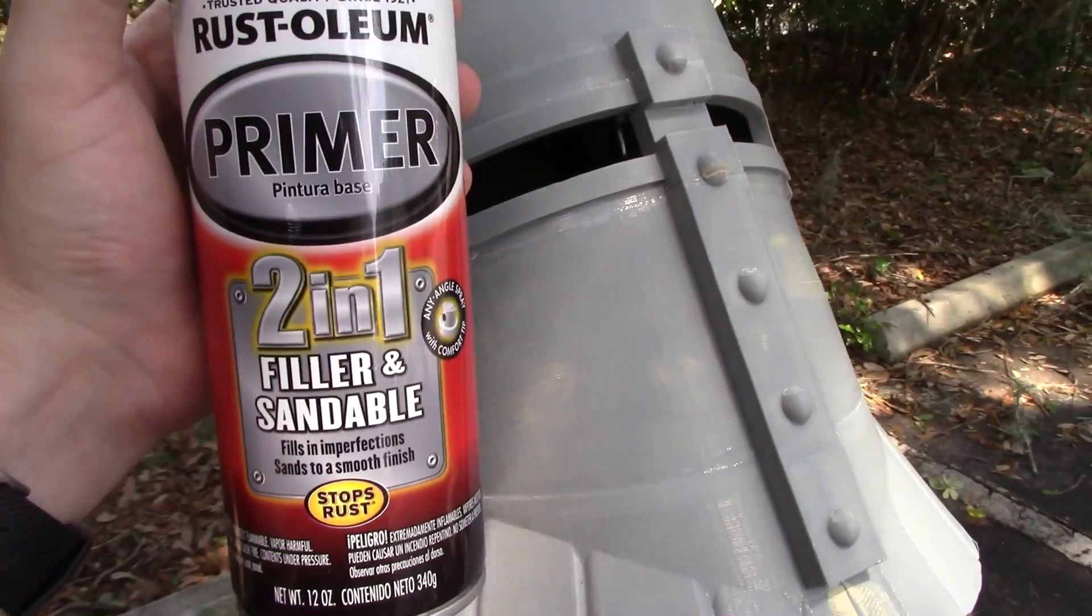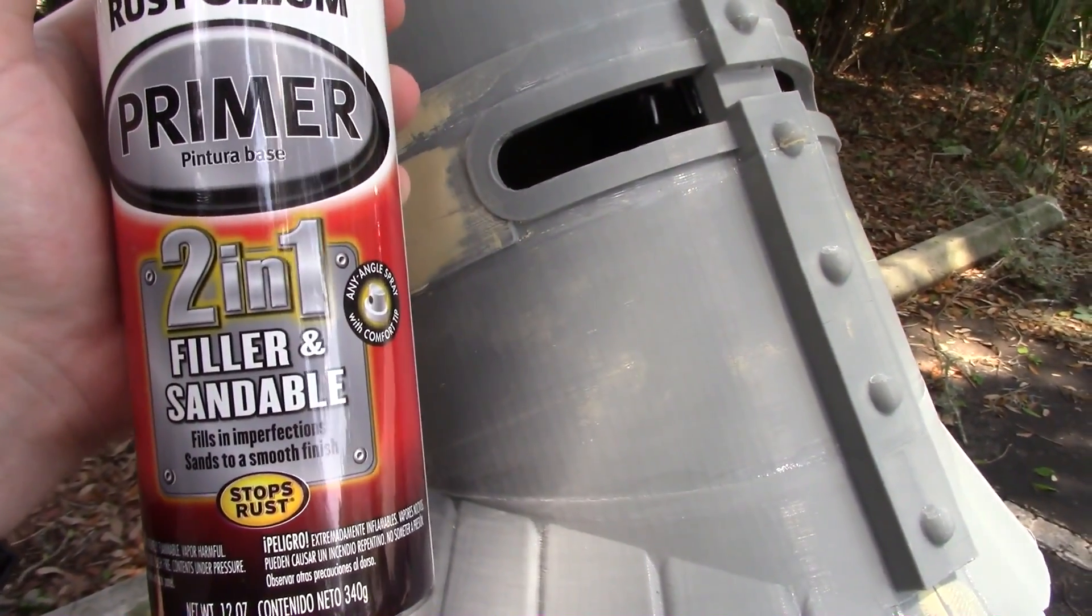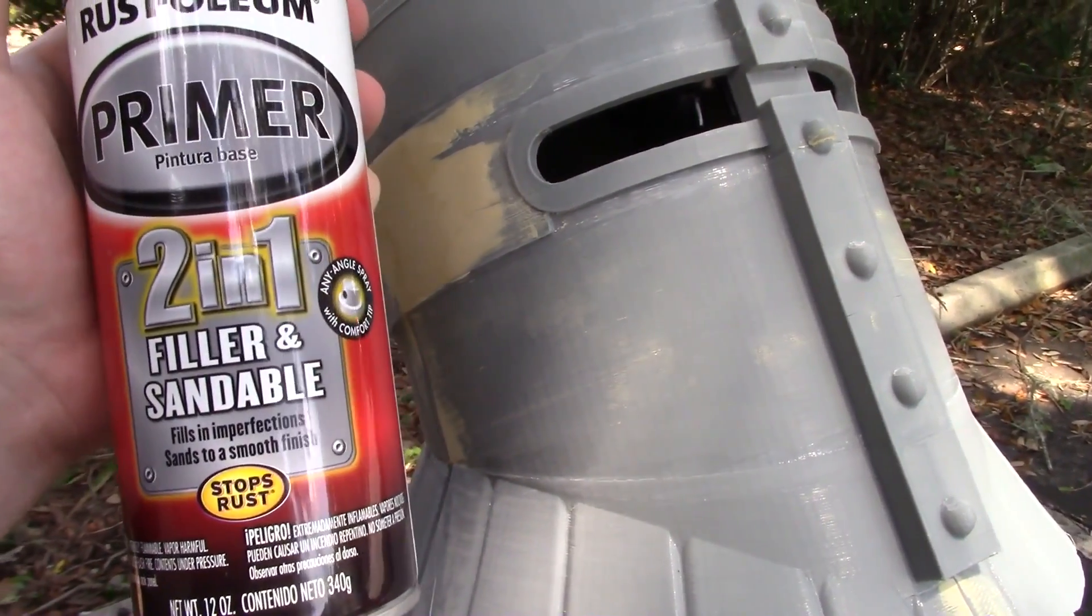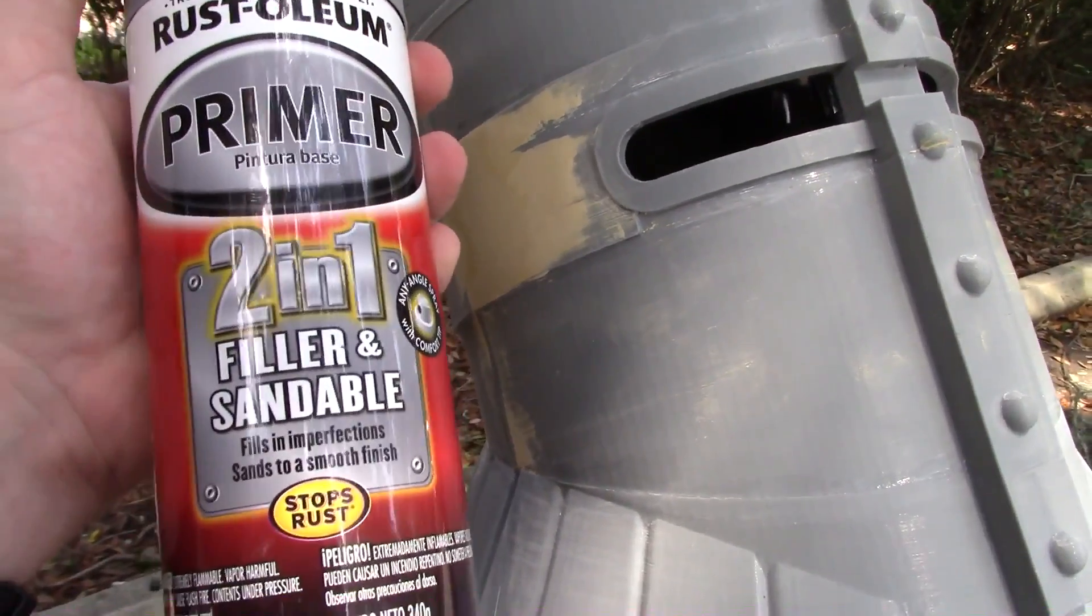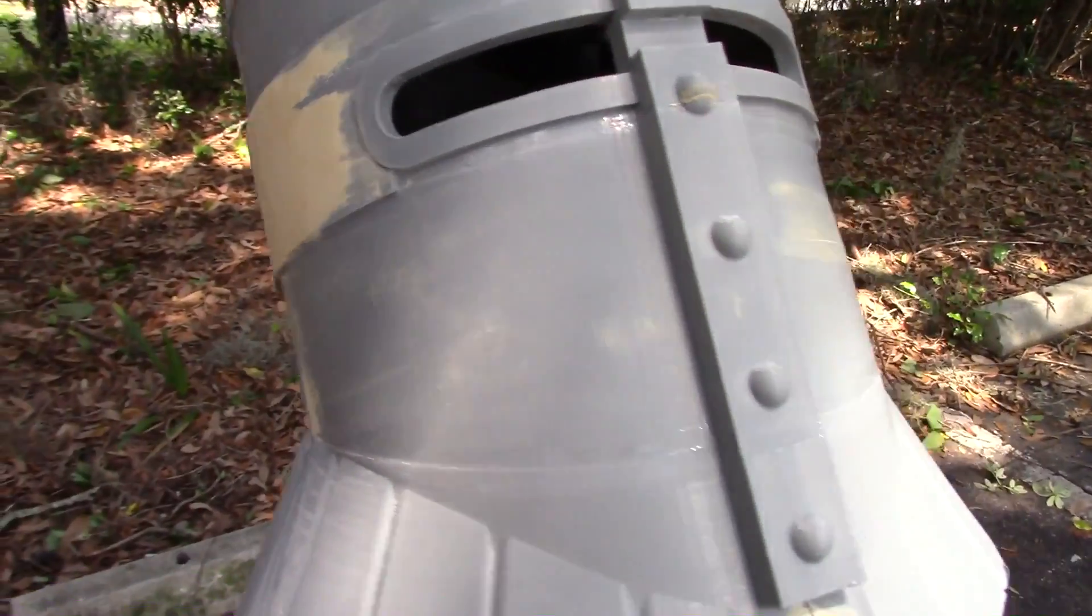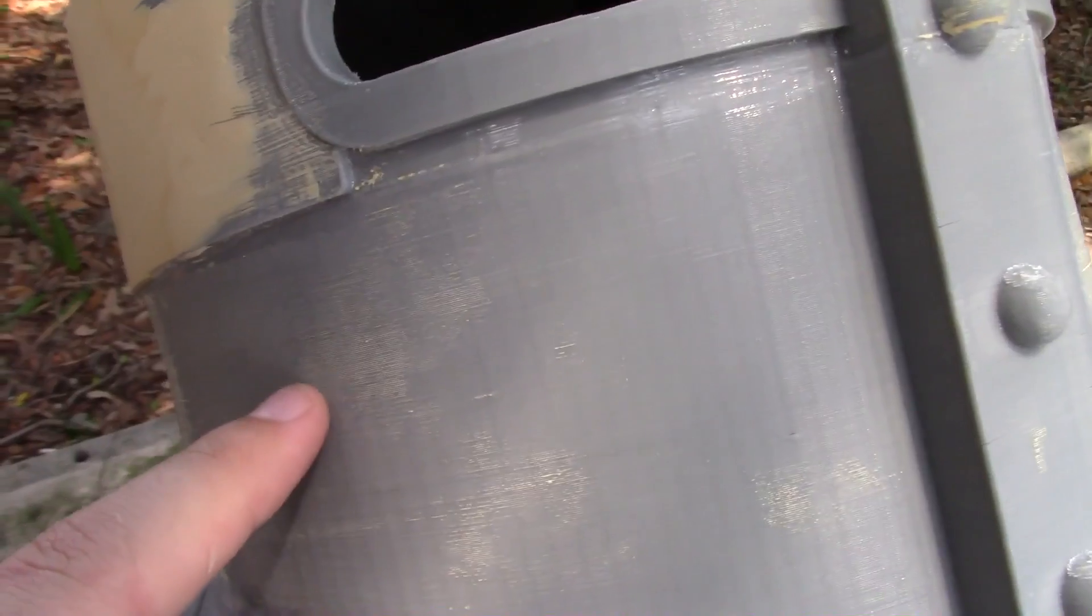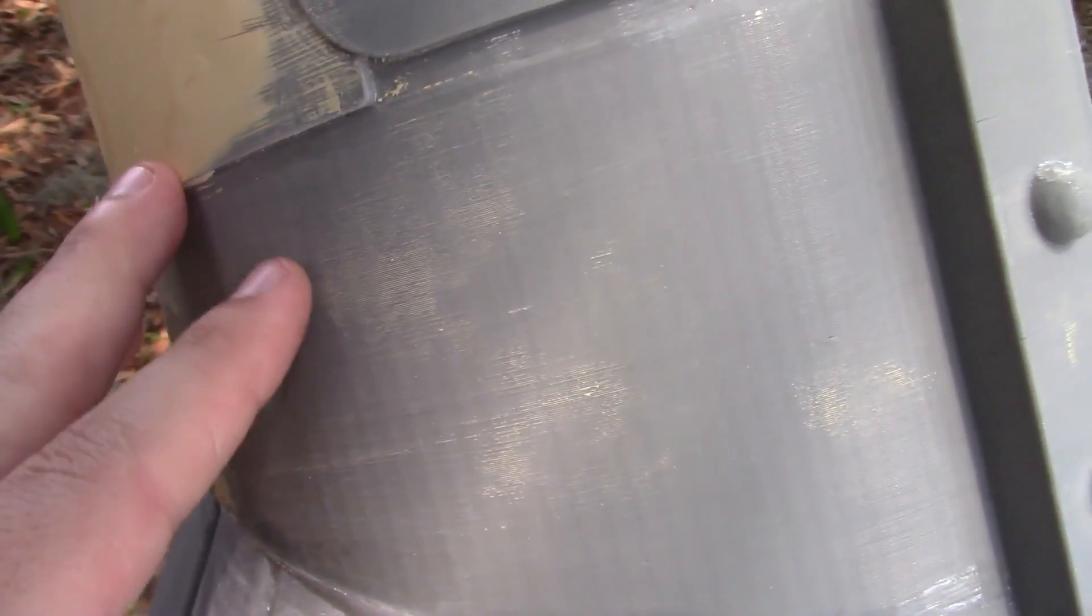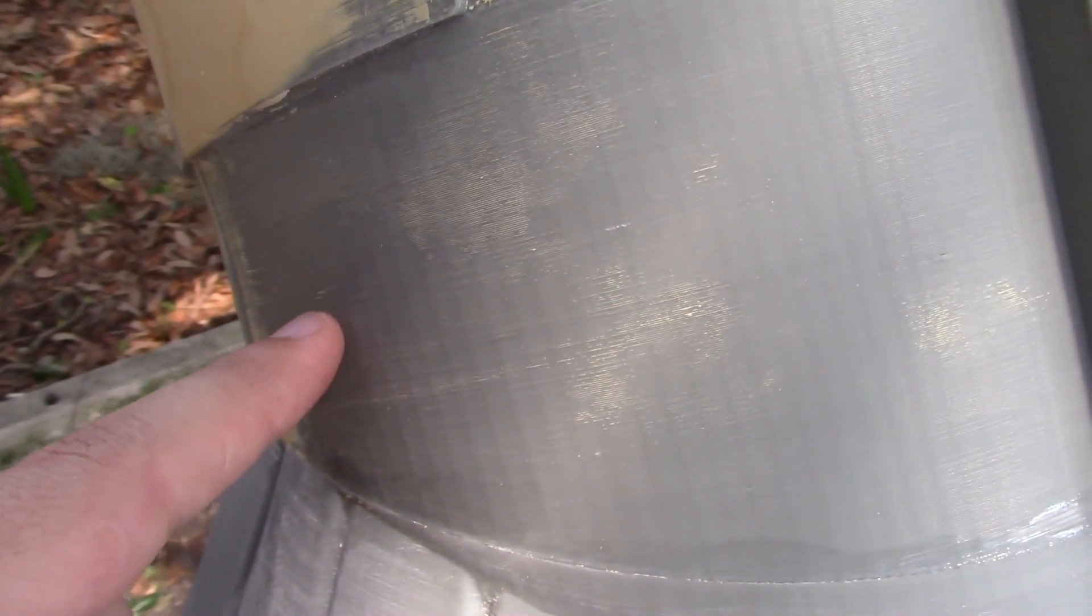This is two-in-one primer, a primer that is a filler and it's sandable. It's a very thick primer that I'm going to see if it would be good to fill in all of the layers and help hide the layers of 3D printed parts. If we look at the 3D print, you can see all of these little tiny lines that are each individual layer of this 3D print.